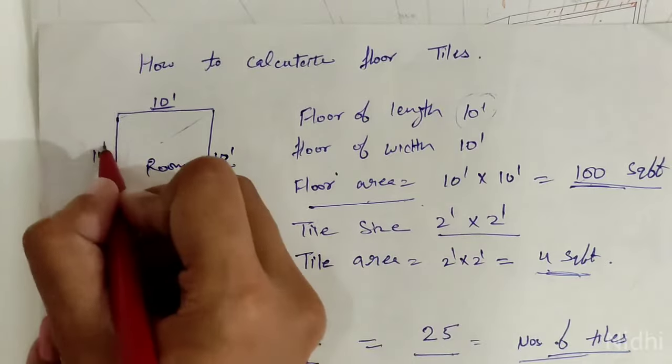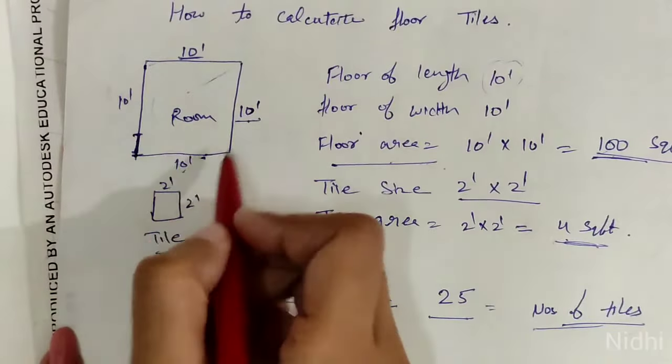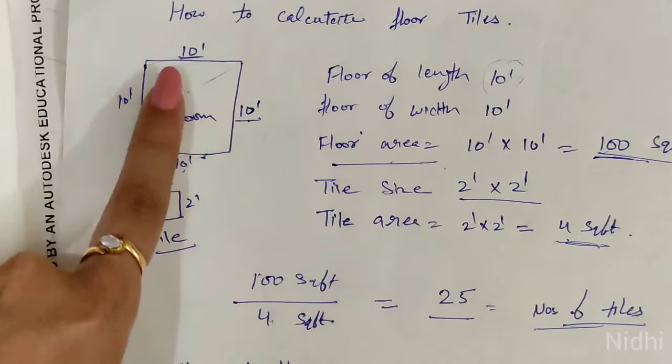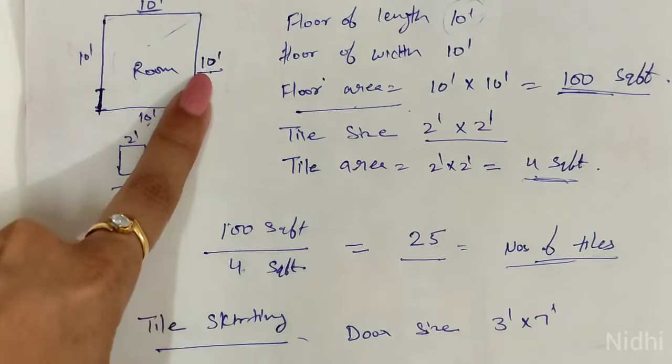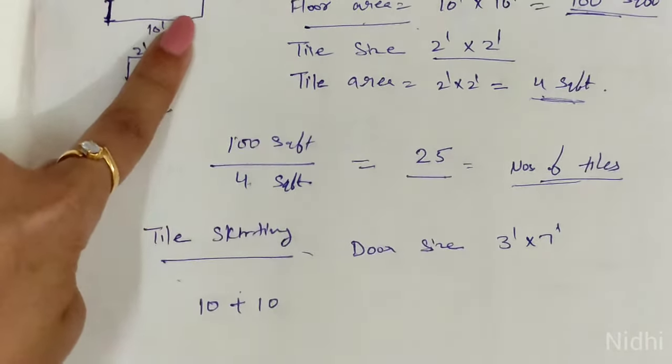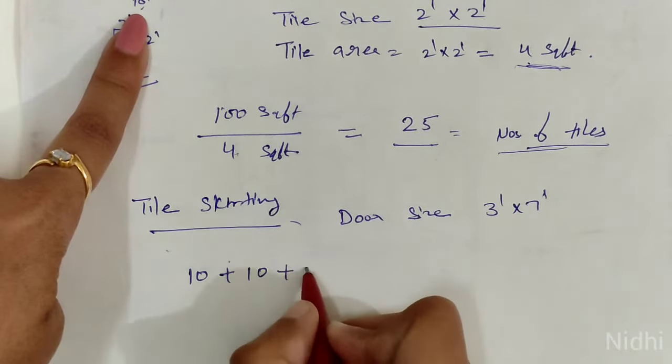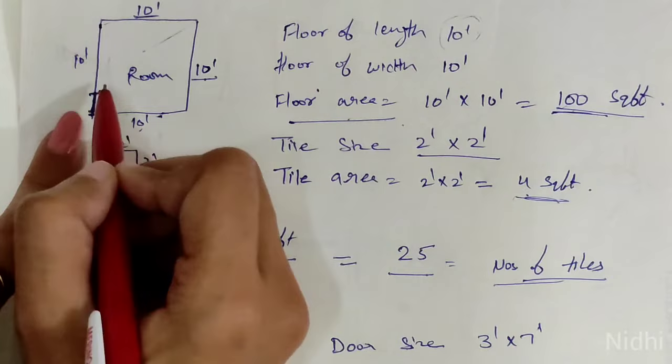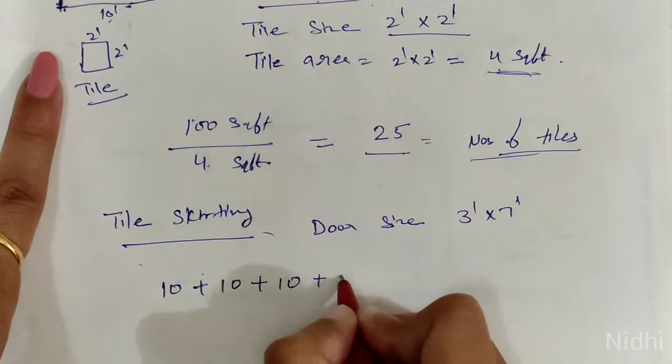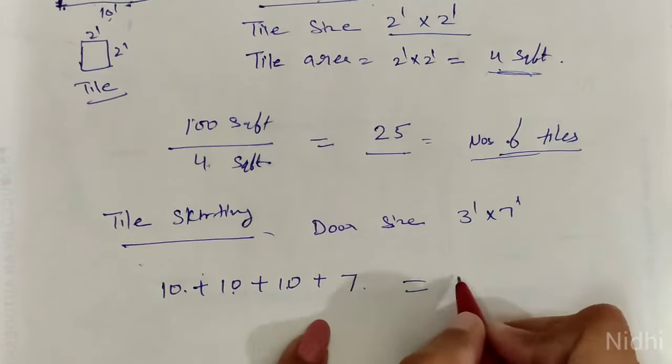10 feet, 10 feet from each side. Skirting length: what will we do? Just add all the numbers. First 10, plus 10, plus 10. This is a door, so 10 minus 3, here we have 7. 10 plus 10 plus 10 plus 7, that is 37 running feet.